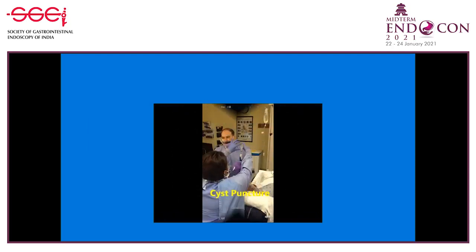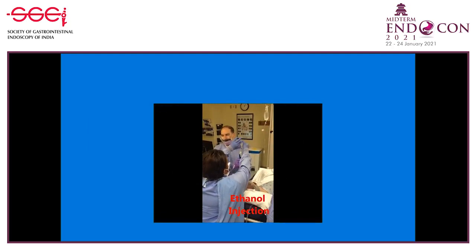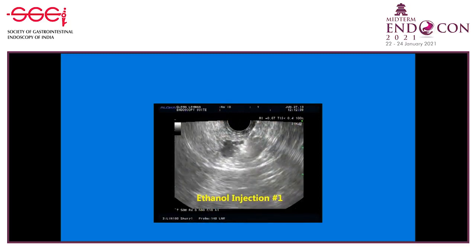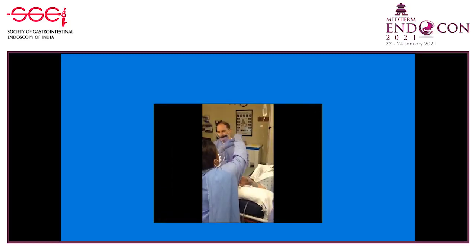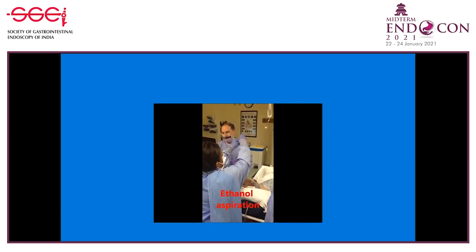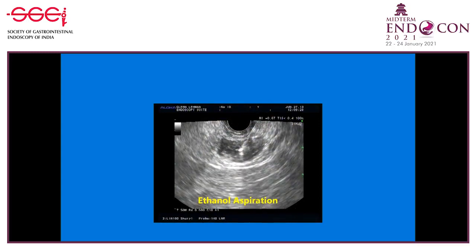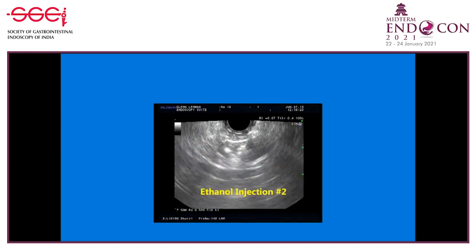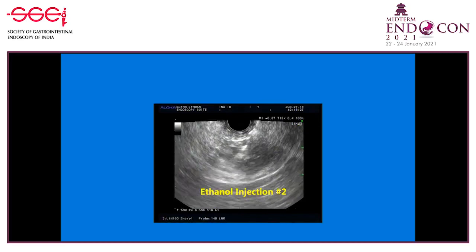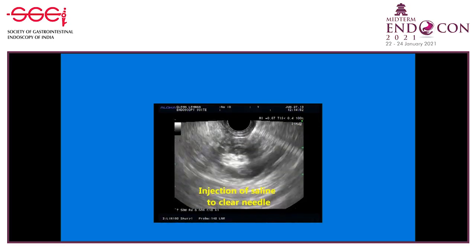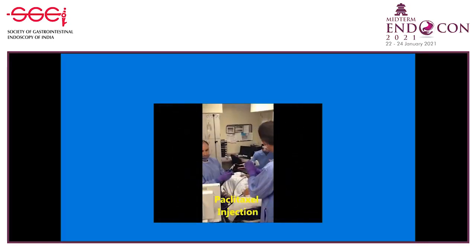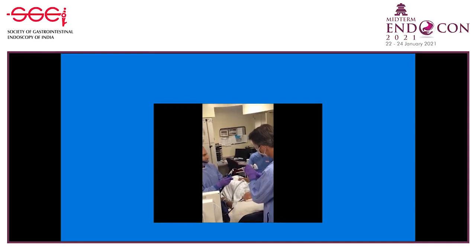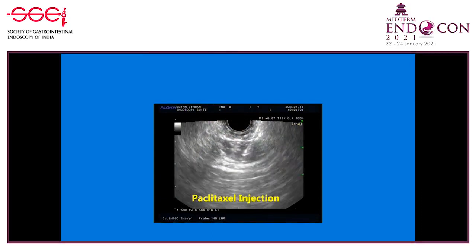For EUS-guided cyst ablation, initially there is cyst puncture. The initial lavage and aspiration can be performed with either saline or ethanol — in this procedure we are using ethanol as a lavage agent, typically performed over a three to five minute time frame. The initial injection is followed by aspiration, designed to expose the cyst epithelium to the agent. If ethanol is used it may have toxic effects; if saline is used it may destroy cells mechanically. Sometimes you can get rapid denaturation and debris. Once that is finished, chemotherapy is injected — this is me injecting paclitaxel into the cyst — and we leave this in place and do not re-aspirate the chemotherapy.